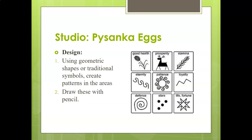Then use geometric shapes or traditional symbols and create patterns in the areas, drawing these on with pencil. Here are some traditional symbols with their meanings: the deer for prosperity, the wheat sheaf for loyalty, the sun for patience, and stars are the little dots. There's also a cheat sheet of designs and patterns on Classroom, or you can Google different kinds of designs and patterns.